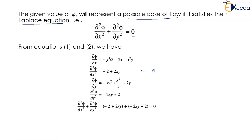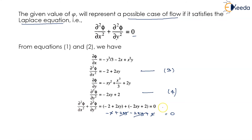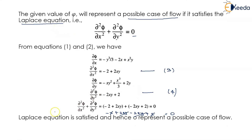Adding equations 3 and 4: (-2 + 2xy) + (-2xy + 2) = -2 + 2xy - 2xy + 2 = 0. The terms cancel out, so the Laplace equation is satisfied. Hence ψ represents a possible case of flow.